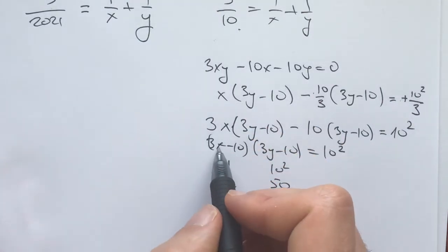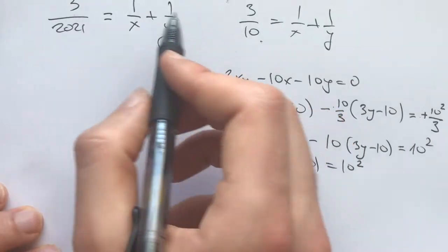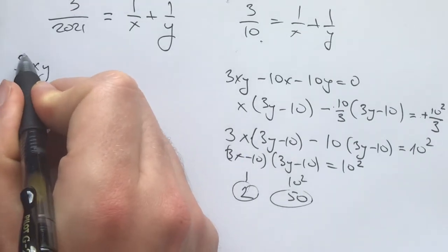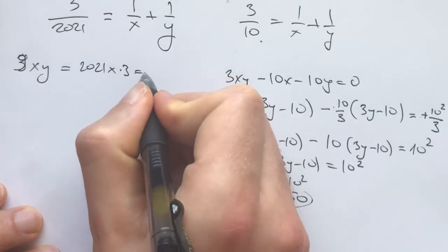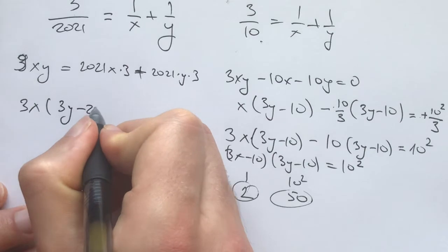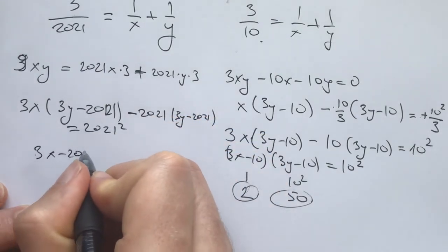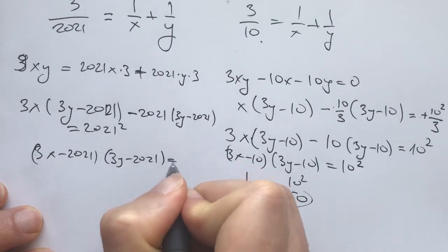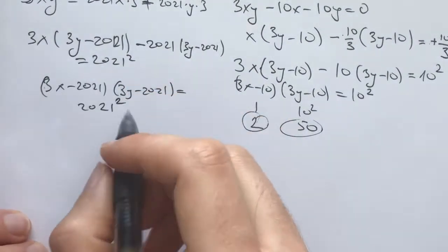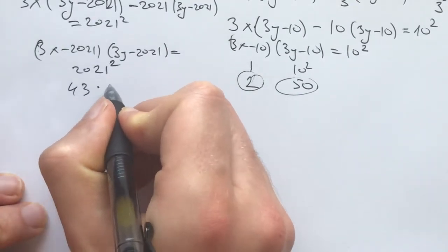Going back to the main problem, let's multiply everything by 3 × 2021 × x × y. What we get is 9xy = 2021 × 3x + 2021 × 3y. Moving everything to one side and factoring, we get (3x - 2021)(3y - 2021) = 2021². To solve this, we need the prime factorization of 2021. Hopefully before every competition you know the prime factors of the year — the prime factors of 2021 are 43 and 47, since 2021 = 45² - 2².